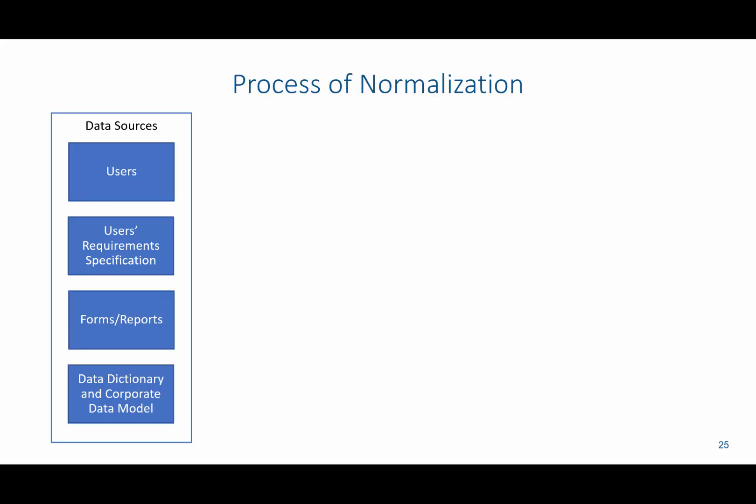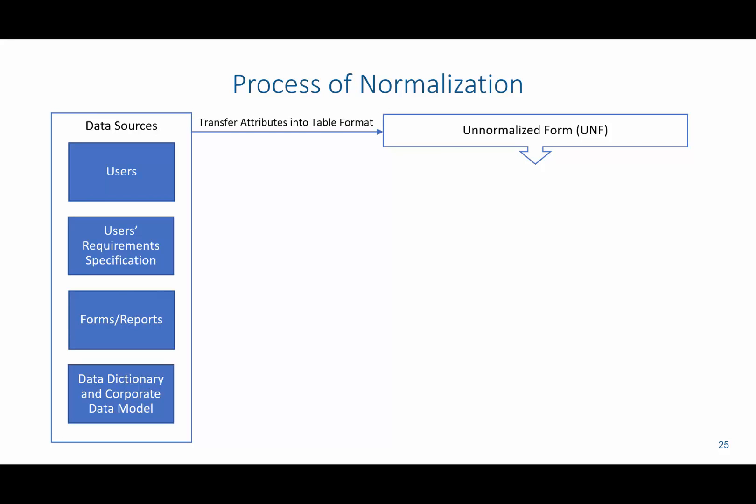What we're going to do is take all the data from these various sources and transfer attributes into table format. It's similar to an Excel spreadsheet where we have columns and rows with no semblance of how they're related together. This is what we call unnormalized form, where all the data has just been slapped in there, and we could even have multiple values in a single cell.